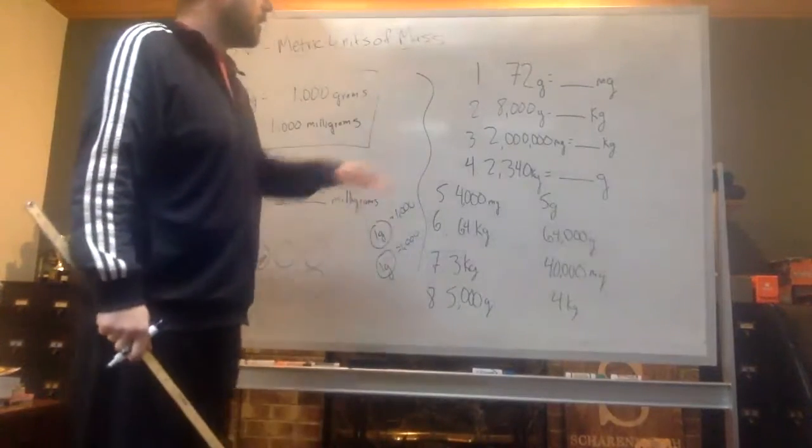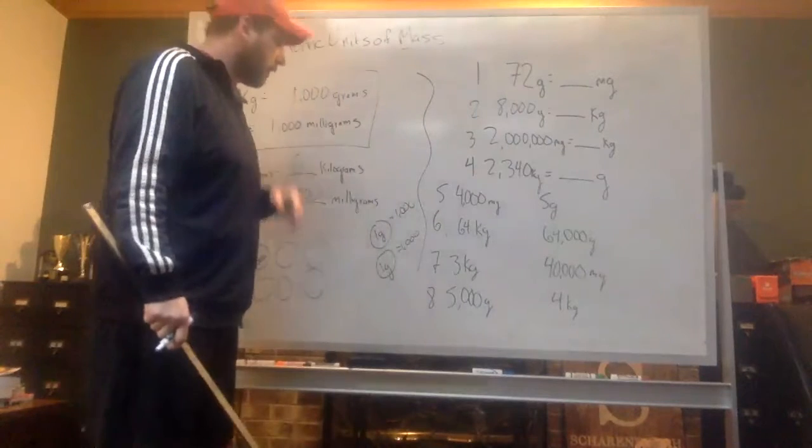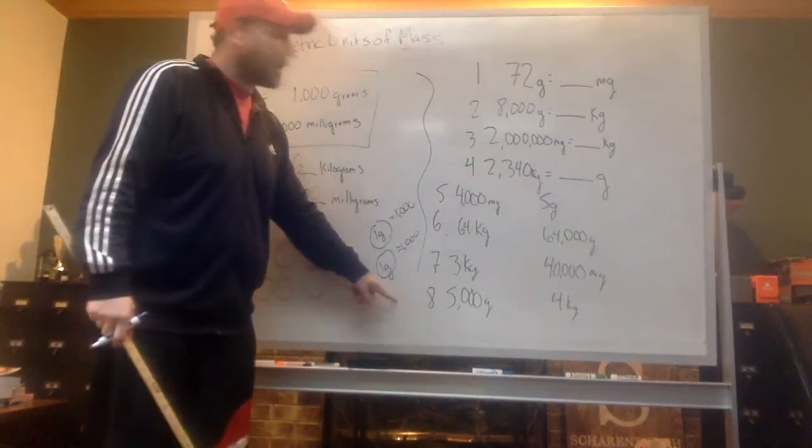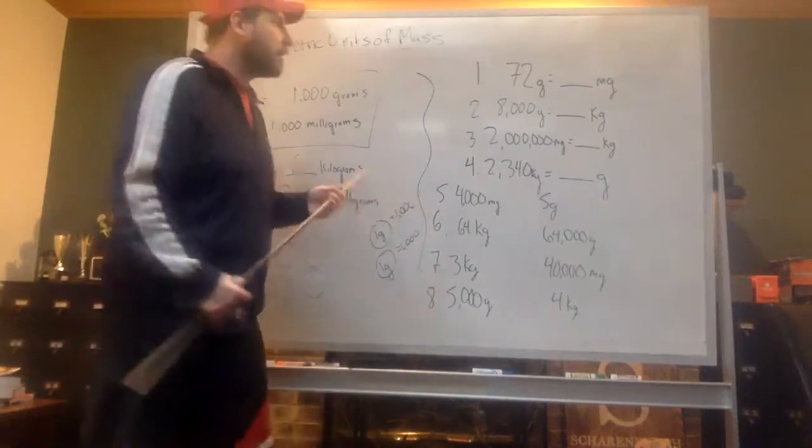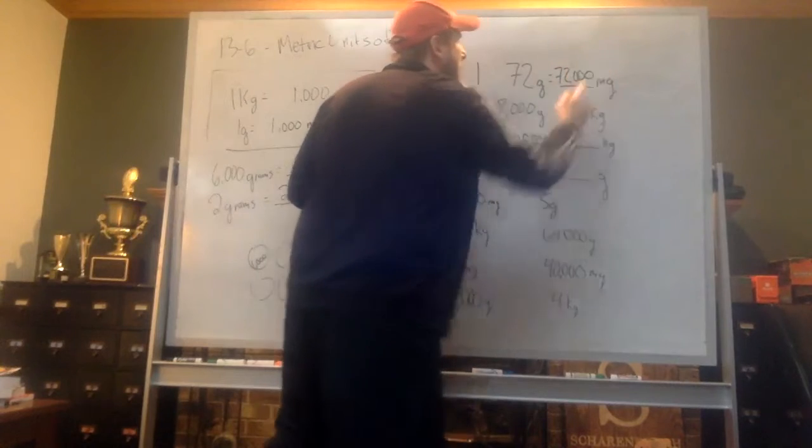If you head to the bottom of the page, we have our examples. And our first one is 72 grams equals how many milligrams? So same thing, if we have 72 of these little bubbles, how many milligrams would that be? Well, if each one is one thousand, that means there'd be 72,000 milligrams.